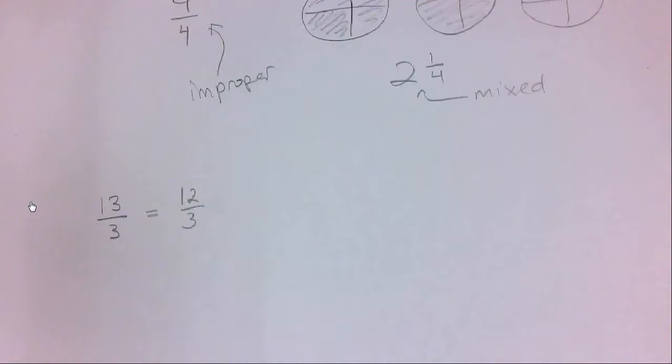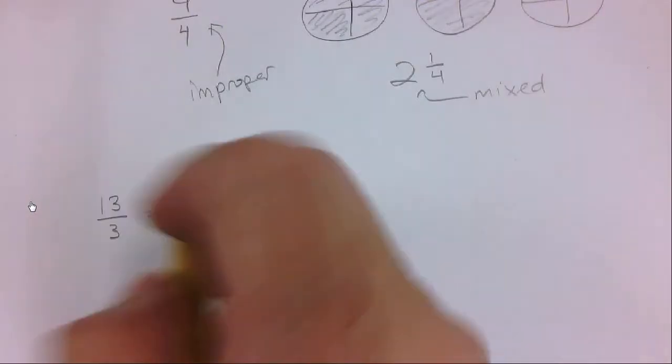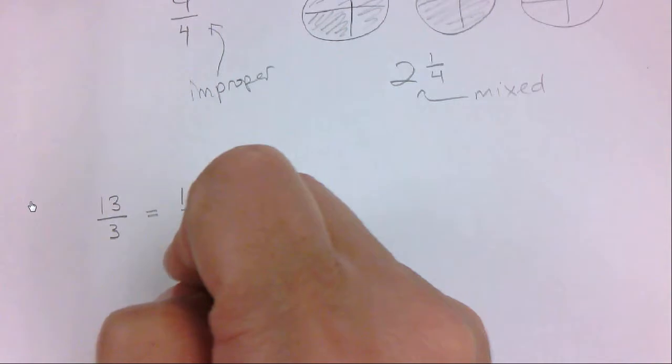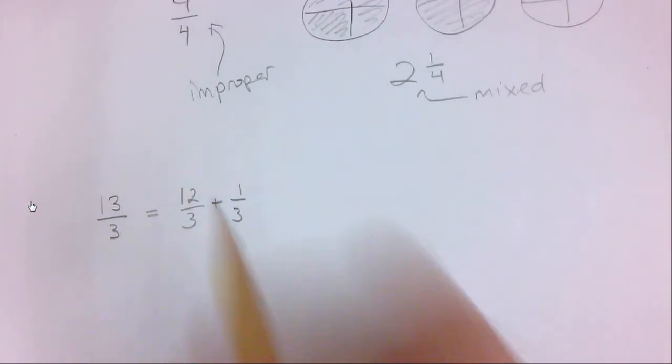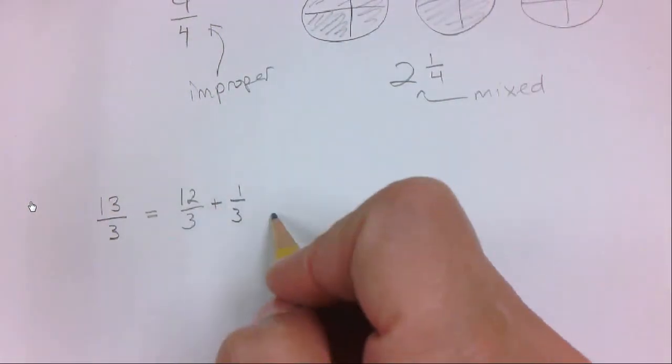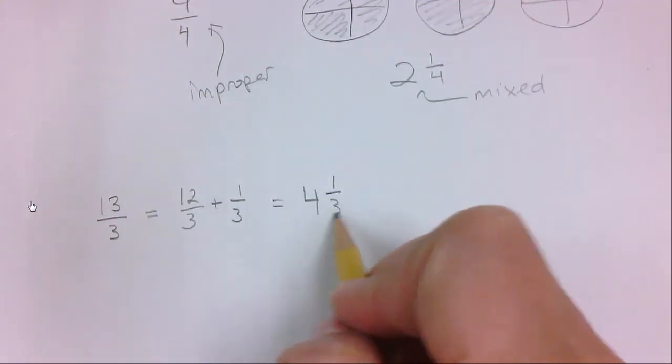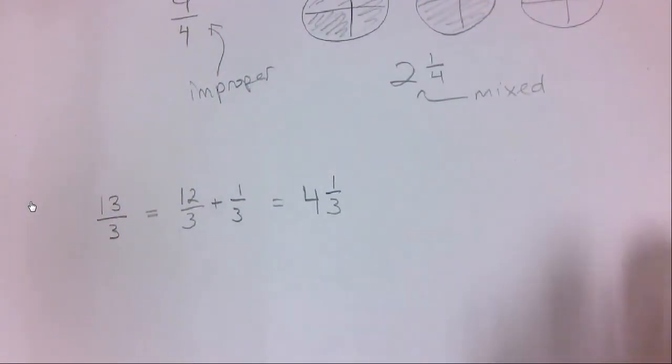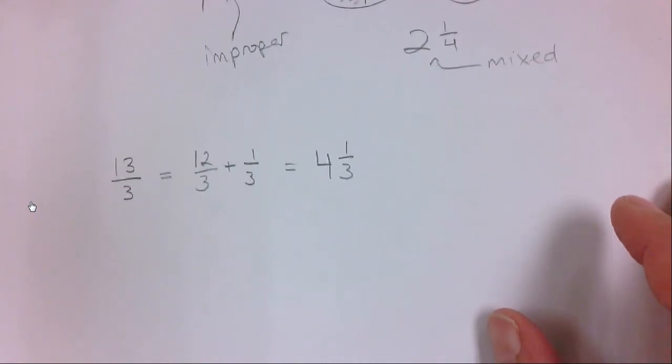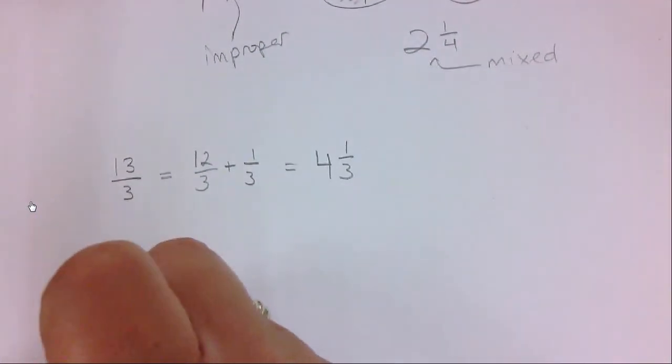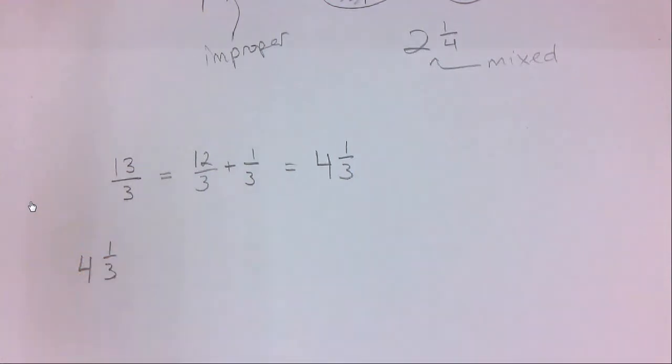So this is going to equal to, you can split it out this way if you prefer, just so you can see where it's coming from. We can divide this out into two parts, 12 thirds and 1 third. They add up to 13 thirds, but the 12 thirds is just a 4, it's a whole 4, and then you have 1 third left. So 13 thirds is 4 and 1 third.